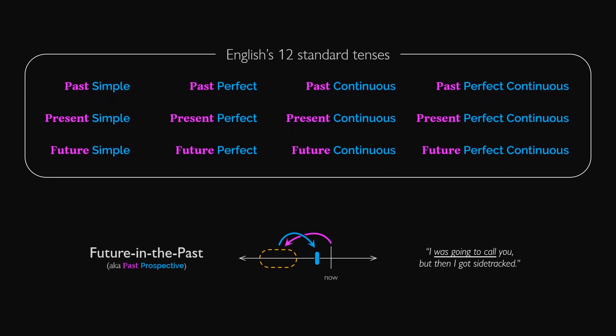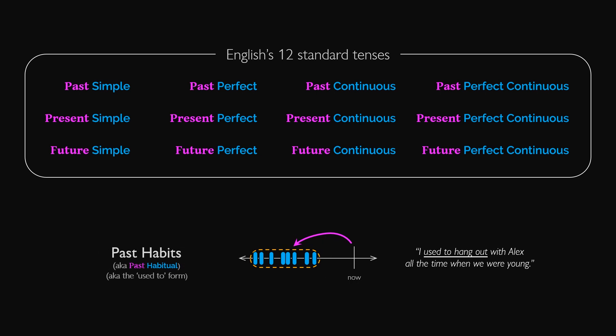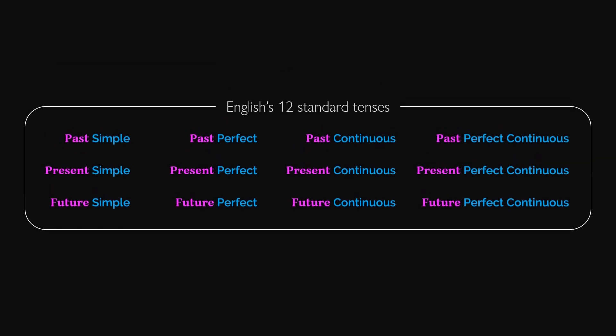There are also some non-standard tenses, such as future in the past or past habits, and these can get a little trickier since English doesn't have a marked aspect for habituals, for instance, but instead has a different way to express when such verbs take place. We're not covering those in this video, but just know that there are more options than the 12 standard tenses.